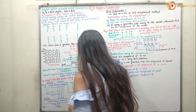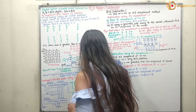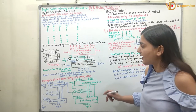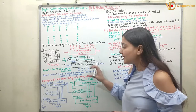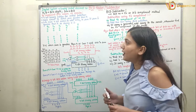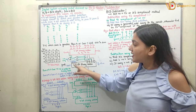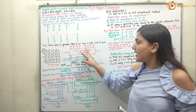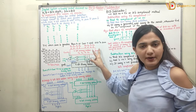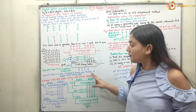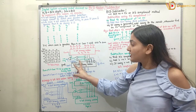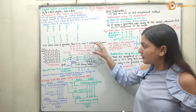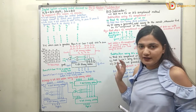Here I am getting S3, S2, S1, S0. So I am adding S3, S2, S1, S0 with 0110, and here I will get S3, S2, S1, S0 — this is my BCD sum output. So we require two 4-bit binary adders: the first 4-bit binary adder to add the two 4-bit numbers, and the second 4-bit binary adder for the addition of 0110 to the given sum if the sum is greater than 9.